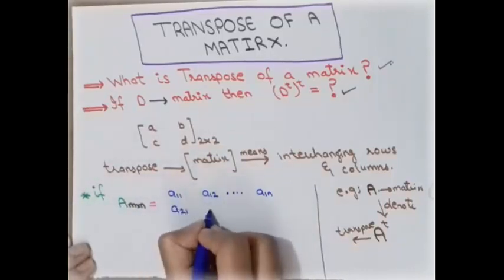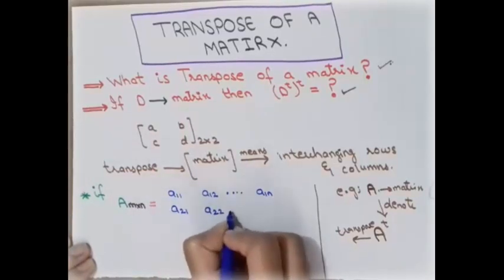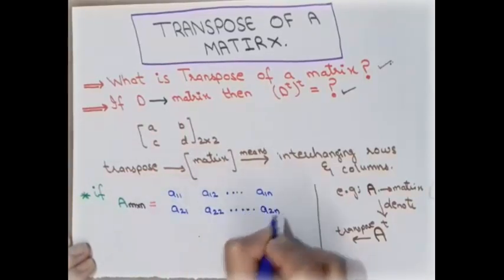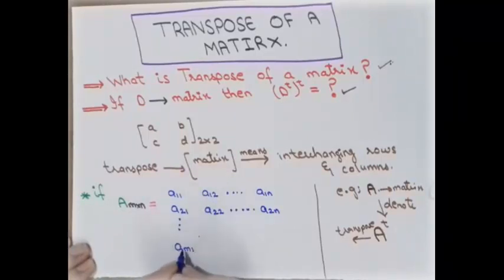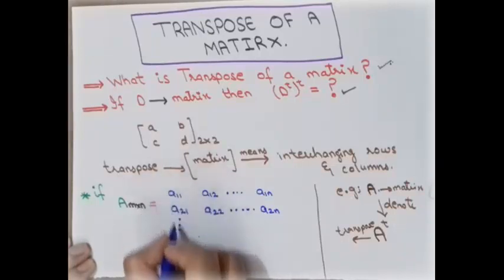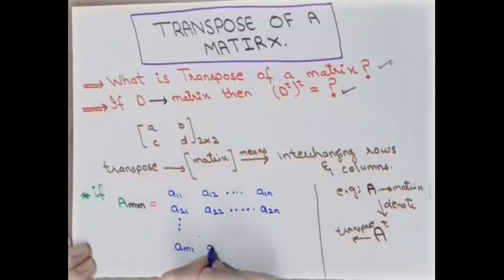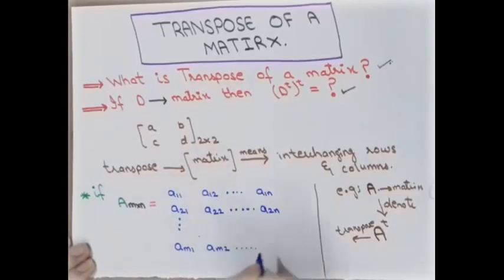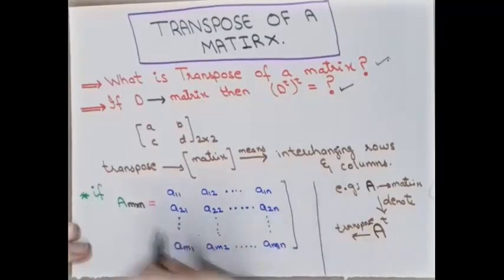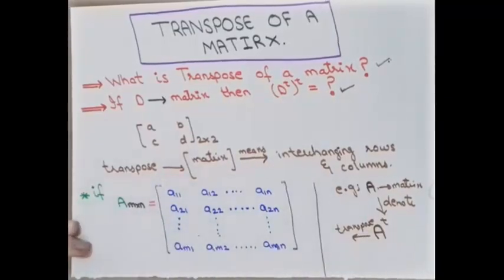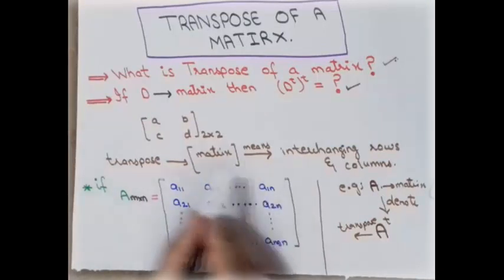In this way we can take the general elements. We have m rows, and the entry a_m1 means the mth row and first column, and similarly a_m2 up to a_mn. So this is our matrix of order m cross n, and now we have to find the transpose of this matrix.